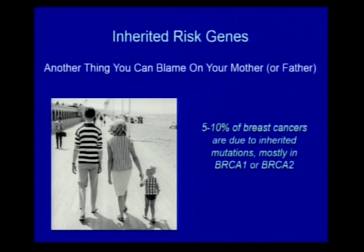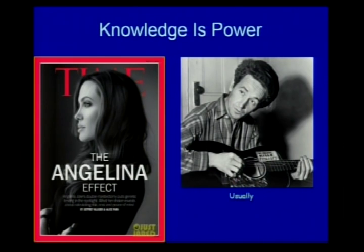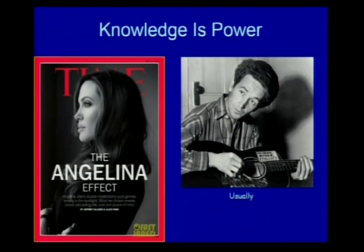Five to ten percent of breast cancers arise in women — or men — who carry an abnormality in BRCA1 or BRCA2, which can be inherited from either parent. For many people, knowledge is power. Many of you know the Angelina Jolie story — she lost her mother to ovarian cancer and a maternal aunt was also affected. She found out she carried a BRCA1 mutation and underwent a prophylactic bilateral mastectomy. We have preventive strategies for people at risk that work. However, knowledge has not yet translated into power for every condition — consider Woody Guthrie, who had Huntington's disease.